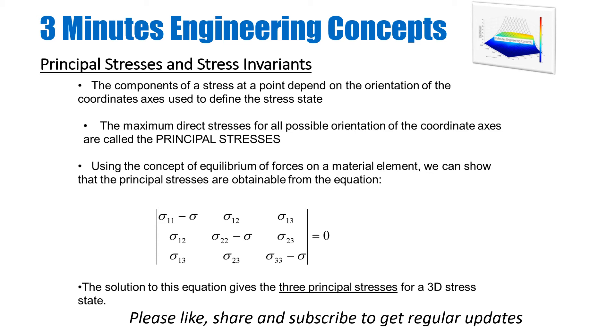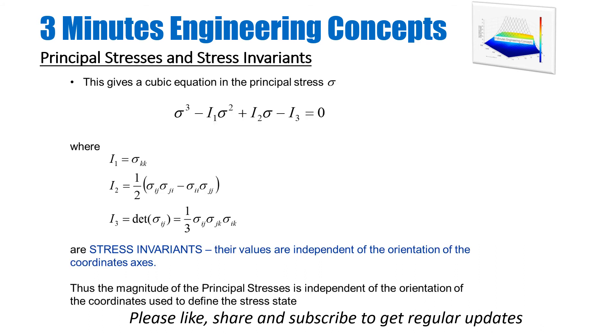We call them σ₁, σ₂, and σ₃. Expanding the determinant gives a cubic equation: σ³ - I₁σ² + I₂σ - I₃ = 0, where I've replaced the terms with I₁, I₂, and I₃. The relationships are given at the bottom. These I₁, I₂, and I₃ are called stress invariants because their values are independent of the coordinate system orientation.